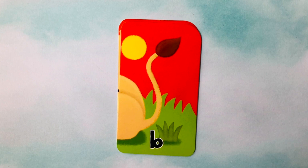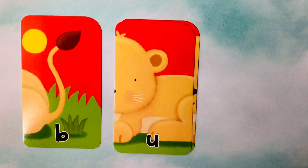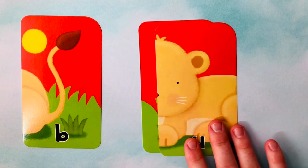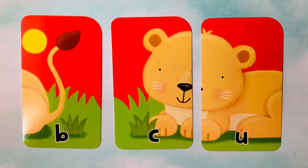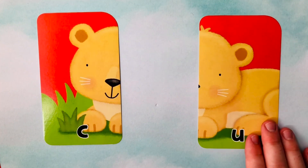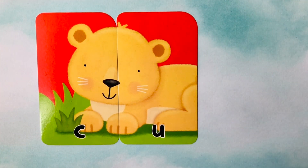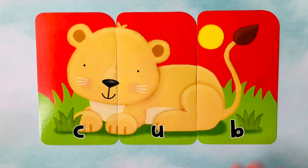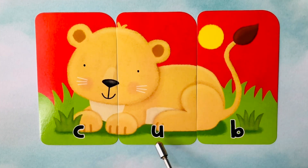Let's learn how to spell words. Looks like we're starting off with a B. We also have a U. And our third letter is a C. I think we're trying to spell the word cub. Cub starts with a C, it follows with a U, and it finishes with a B. C-U-B spells cub.